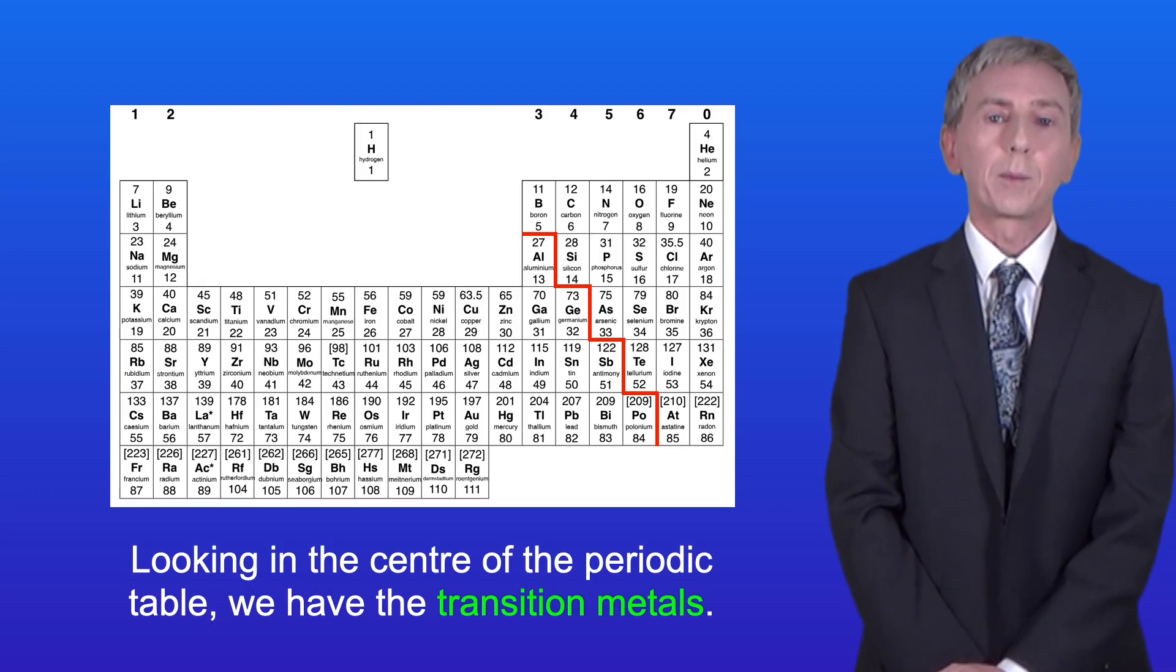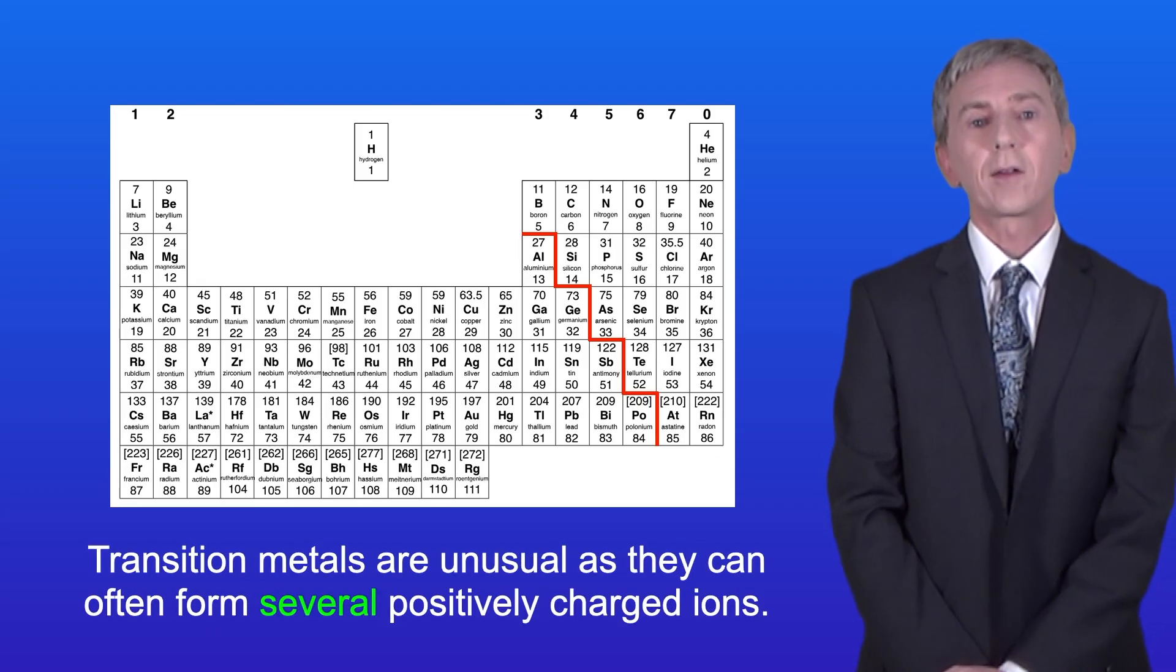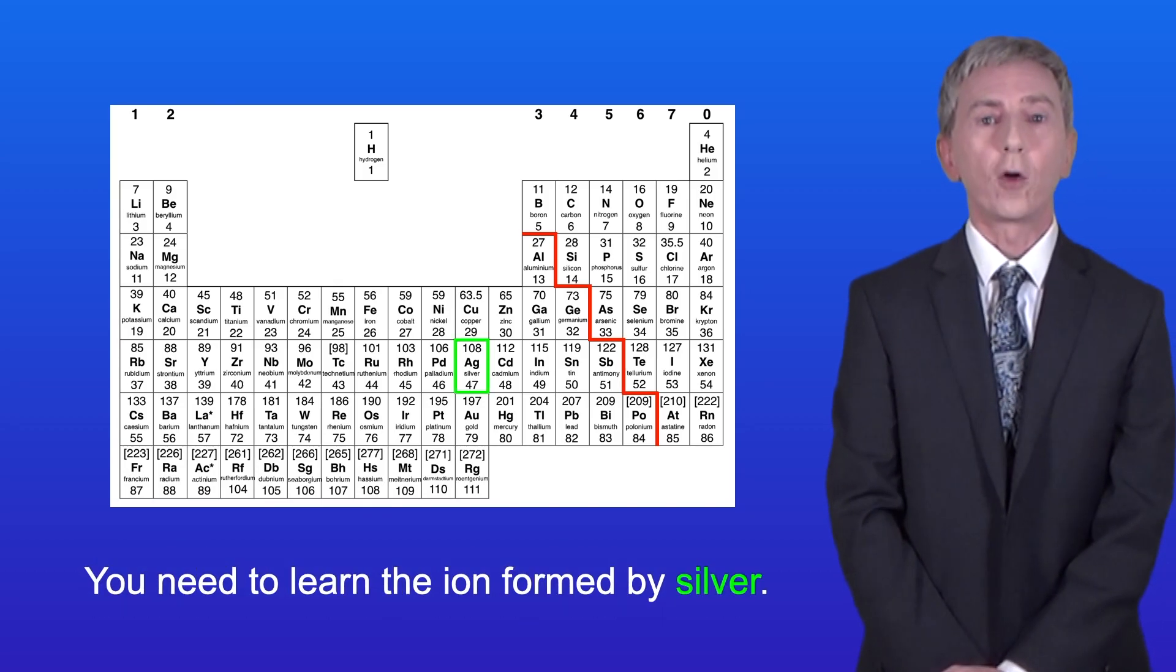Looking in the centre of the periodic table we've got the transition metals. Transition metals are unusual as they can often form several positively charged ions. You need to learn the ion formed by silver. Silver forms the ion Ag+.